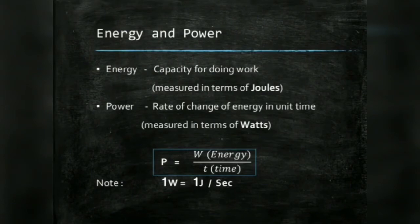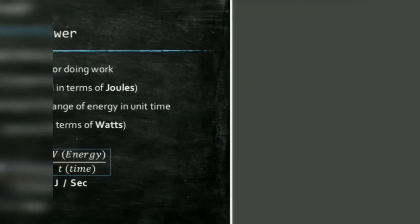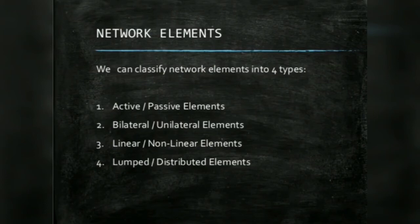Energy is the capacity for doing work, measured in joules. Power is the rate of change of energy per unit time, measured in watts. Power p equals energy divided by time; one watt equals one joule per second. Energy equals power multiplied by time.